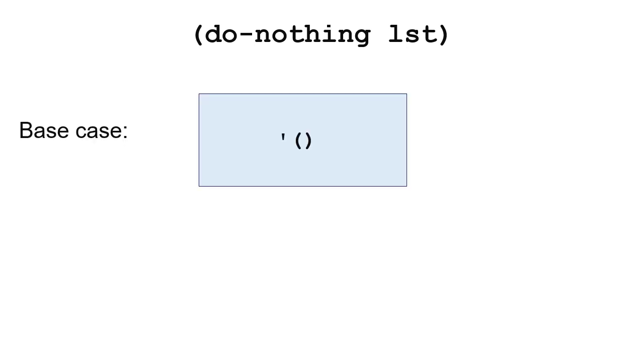The first thing we're going to do is write a list procedure that goes through the list but doesn't do anything — it just returns the list. The reason we're doing this is so you can see the structure of these procedures, because the structures are going to be pretty consistent. If you identify how that pattern works, it'll make writing list procedures a lot easier. So if we're going to do nothing to a list, the easiest case — our base case — is going to be if we have an empty list, because we can just return the empty list if the list is null.